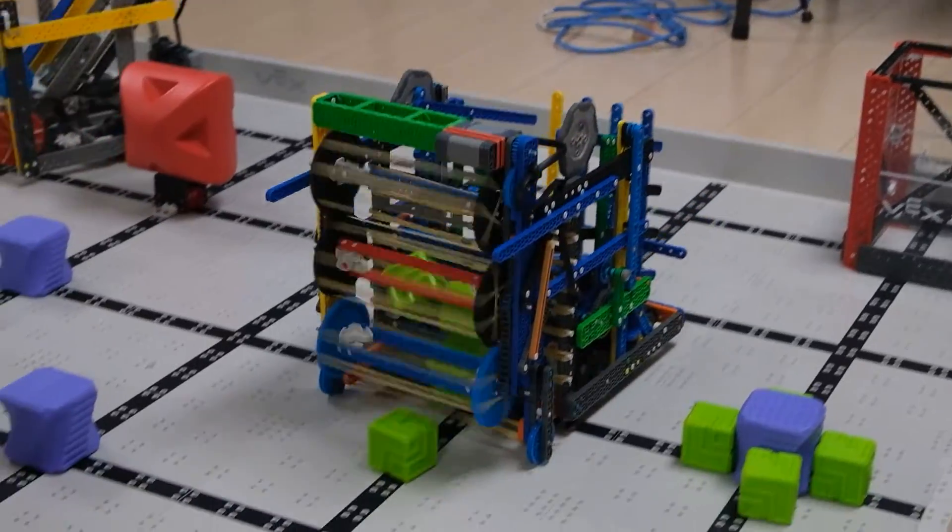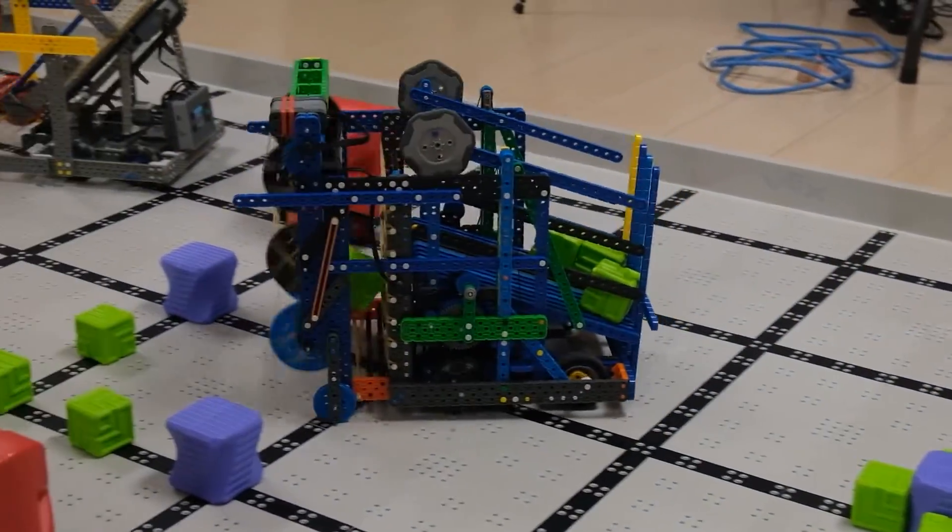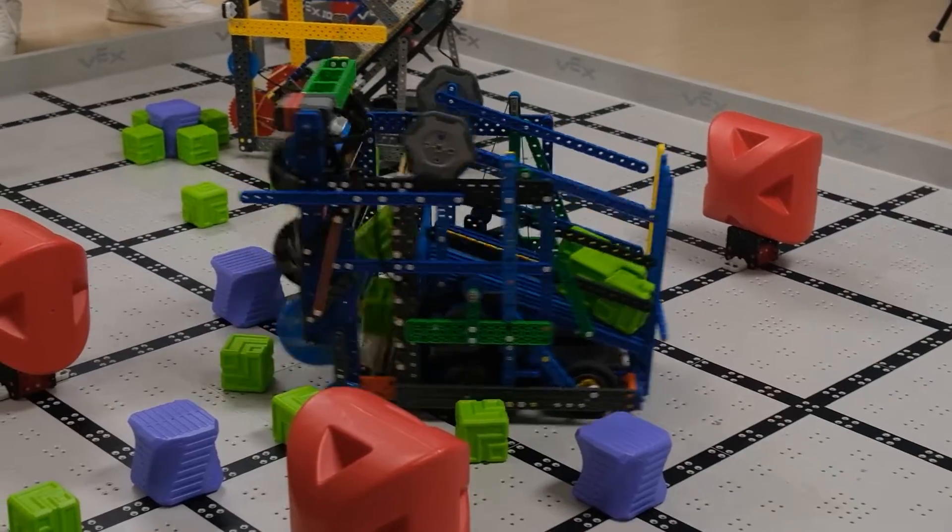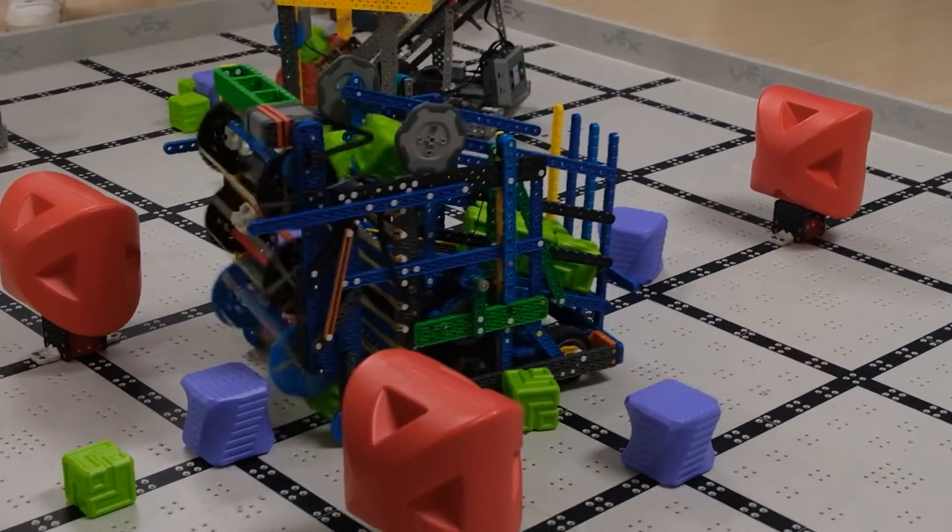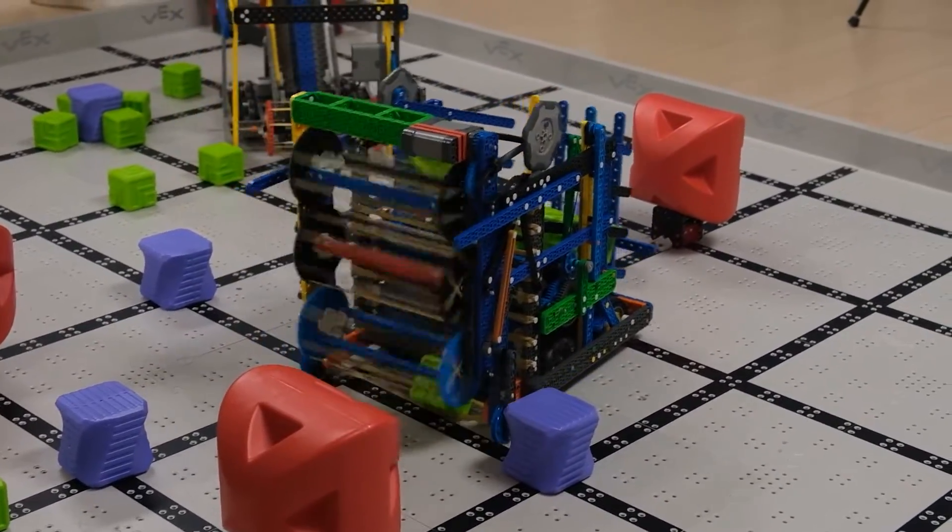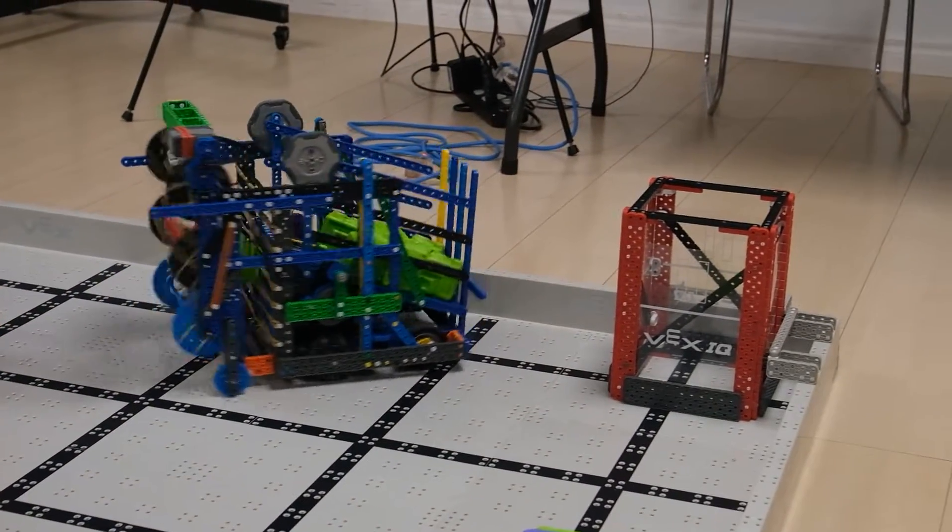Hi, my name is Jacob and this is my fourth year of VEX IQ. For this year's scrimmage, I designed my robot LIFT to hold enough cubes to clear the field and intake both purple and green cubes.